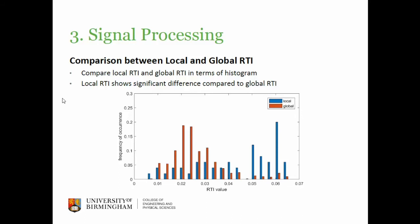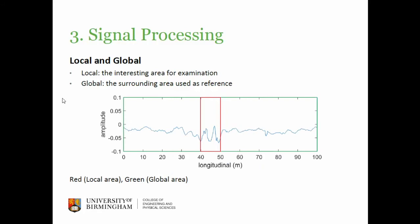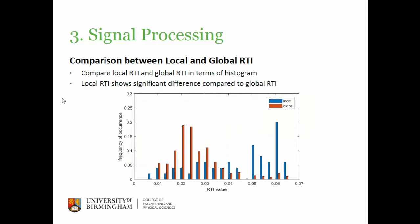We calculate the RTI from both the local and global areas. We cannot compare them directly because the data lengths are different, so we calculate their histograms. If you see here, the local is the blue one and the global is the red one, and they have very different shapes. If the local is in good condition, it should look similar to the global and have very similar histogram shapes.